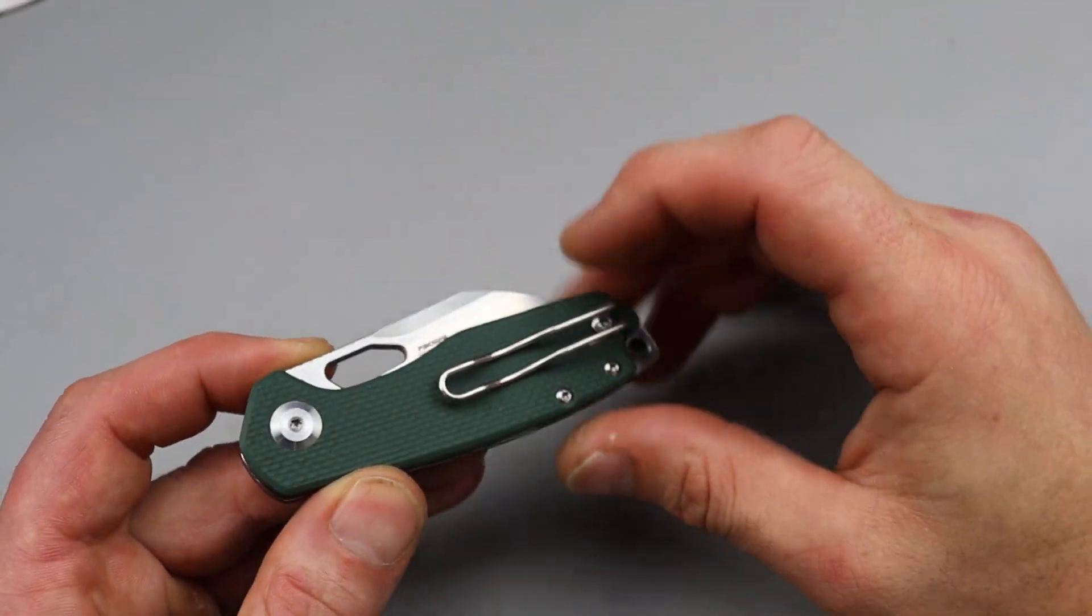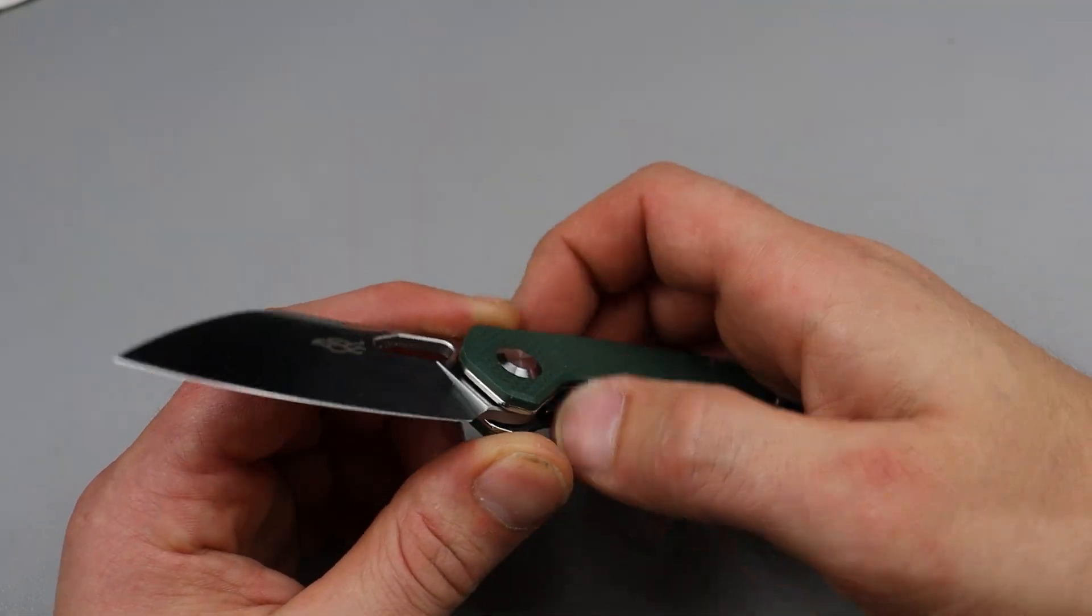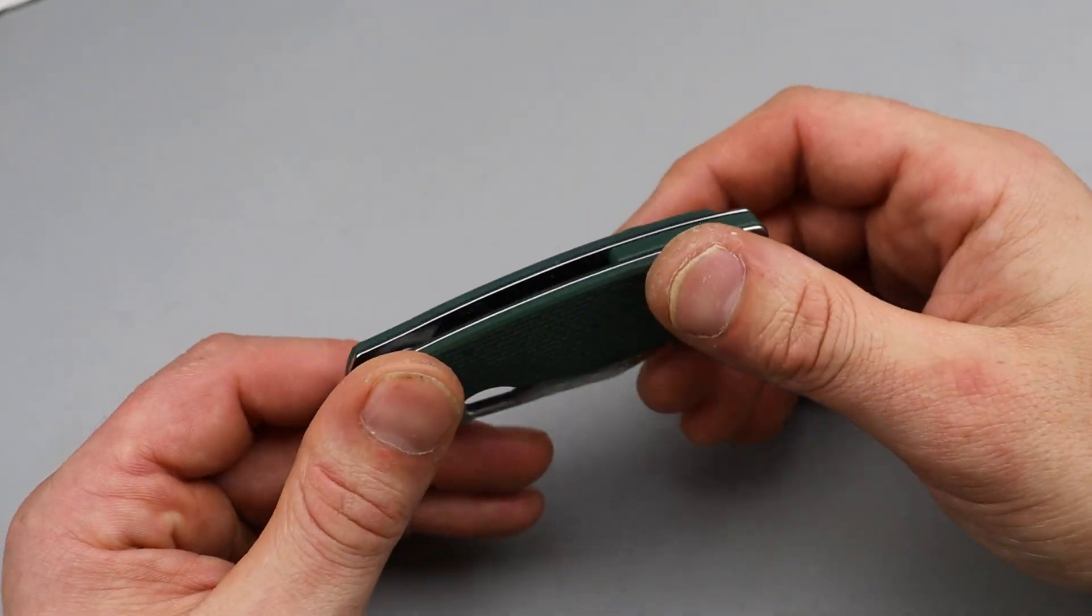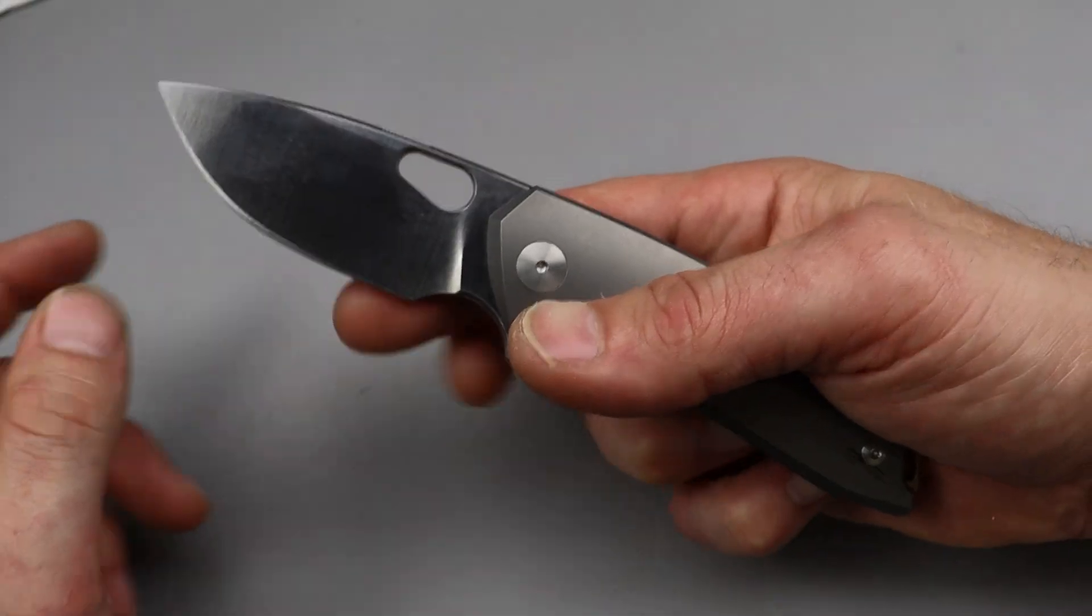It's a solid work knife or solid beater knife. That's what I'm going to call it. A beater knife. A knife that actually is made of good build quality, good fit and finish, good tolerances, good everything, but is very affordable. So if you lose it, break it or whatever, you're not going to be crying. Let's do one more.